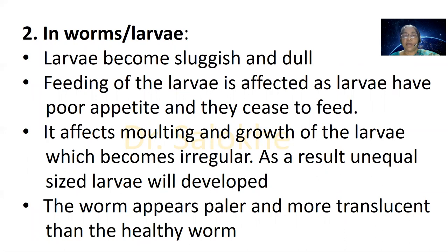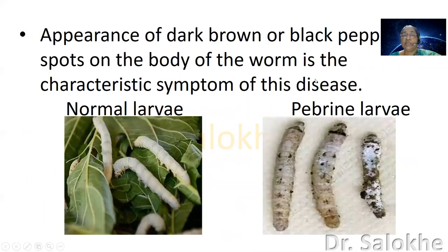Symptoms in worms or larvae: the larvae become sluggish and dull. Feeding is affected as larvae have poor appetite. It affects molting and growth of the larvae, which become irregular — molting is the casting of the cuticle — so in a rearing tray you can observe larvae of unequal size. The worm appears paler and more translucent than the healthy worm. Appearance of dark brown or black pepper spots on the body of the worm is the characteristic symptom of this disease, which is why it is called pebrine disease.